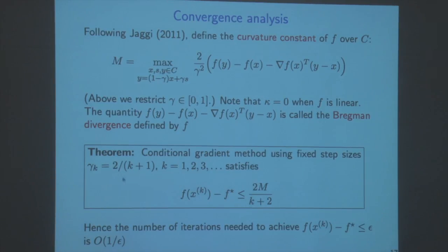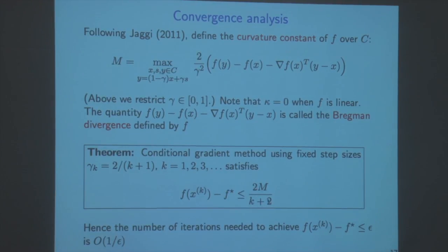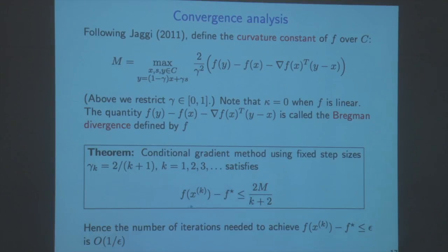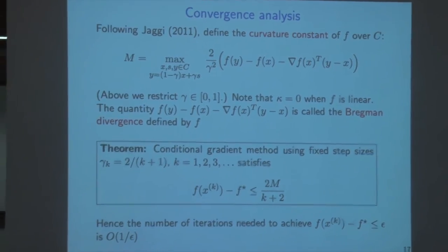If we use the fixed step-size choice gamma_k = 2/(k+1), then after k iterations we get a suboptimality bound of 2m/(k+2). Thinking of m as a constant, this is a 1/k rate, or 1/epsilon rate - exactly the same as projected gradient. An even stronger result from Jaggi's paper says that if you use the duality gap as the exit criterion, after order 1/epsilon iterations you would quit.